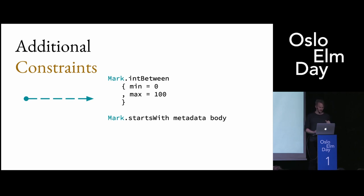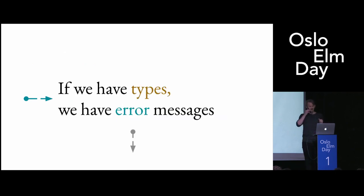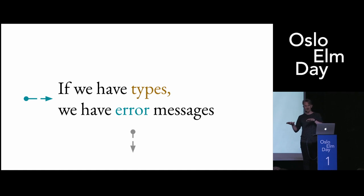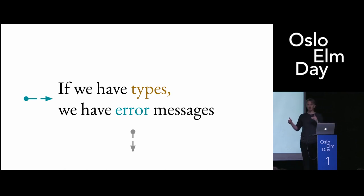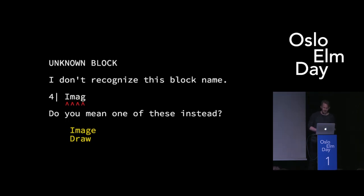But if we have types, we have error messages. I've actually wondered if this is why, as far as I know, there is not a lightweight markup language with types on the level of Elm. It's because people think: if we have types, it will break my flow — I'll be writing, I'll run into a type error, and then everything is broken. So what would these error messages look like? Fortunately, I have some pretty good guidance on that. This is an error message from the Elm Markup compiler, formatted to look familiar. It will figure out exactly what's going on. There are a lot of different error messages it can give, and they're all hopefully pretty intuitive.